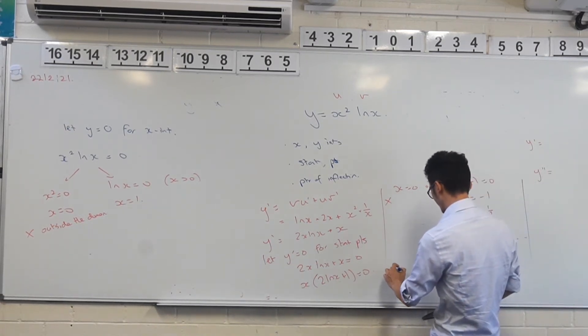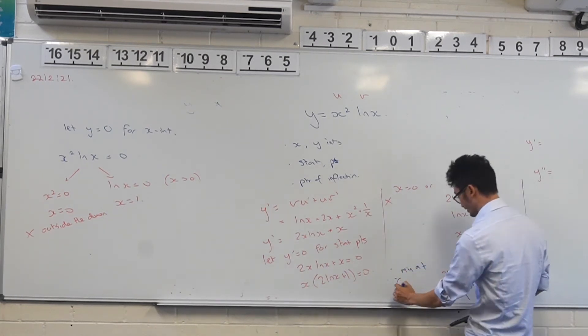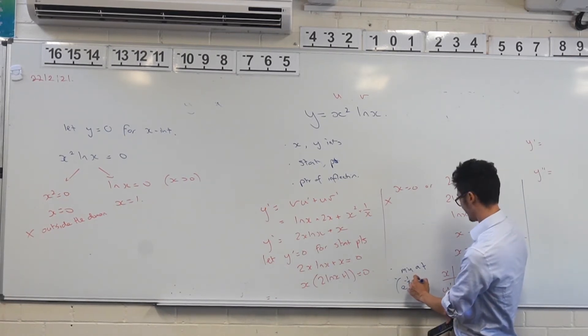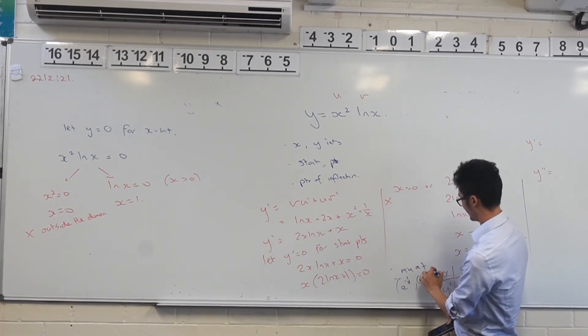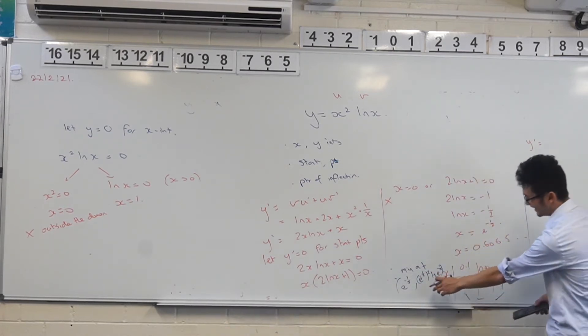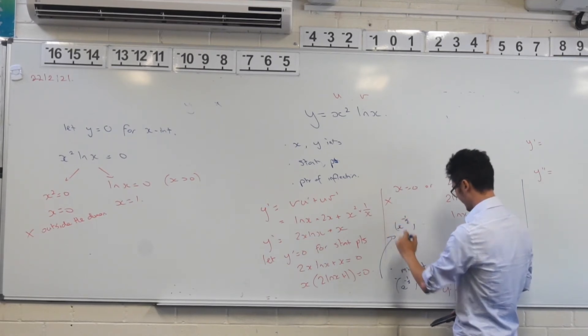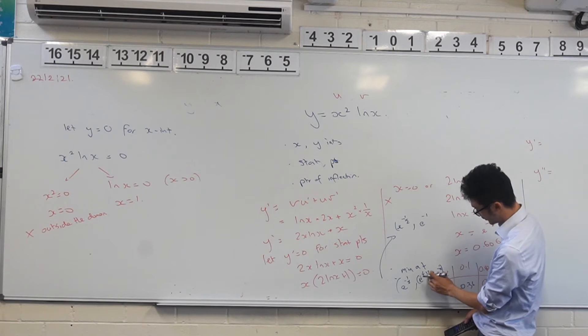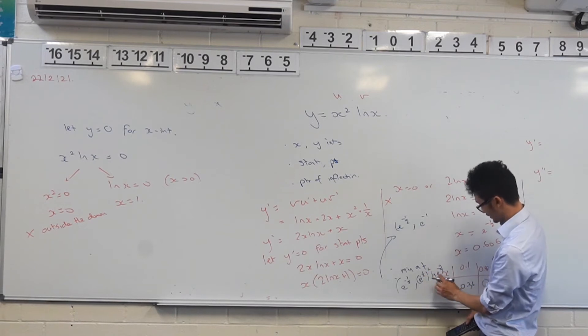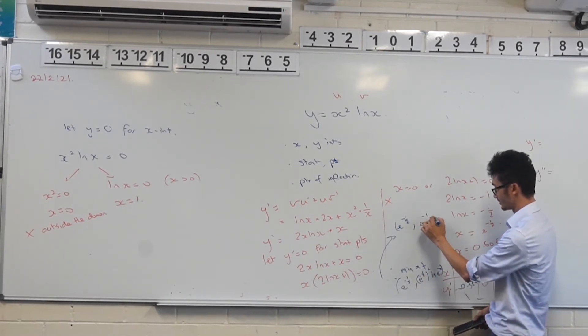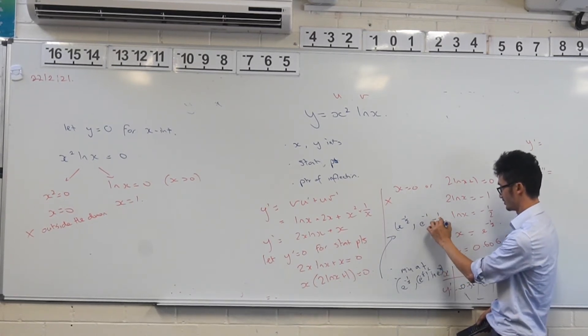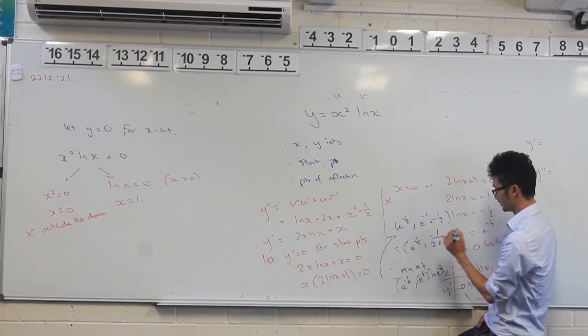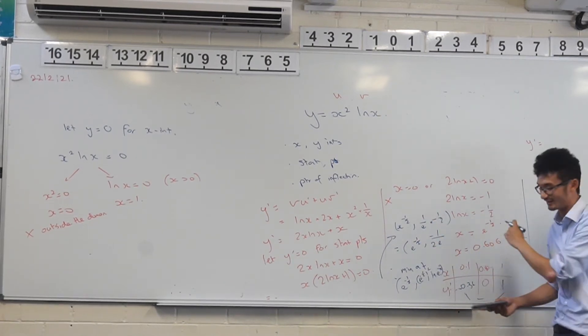So what kind of point do we have going on here? This is going to be therefore there is a minimum at, let's leave it as exact because it's a bit nicer, e to the negative half. And if I put it back into this one, that's going to be e to the negative half all squared times ln of e to the negative half. I can actually simplify it. That's e to the negative half. And that's going to be, if you do use your power rules, we multiply those together, e to the negative one times, and ln of e to the negative half is actually just a negative half. That's just going to be negative one over two e, because that's just one over e. Not my finest work, but you get the idea.